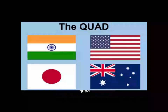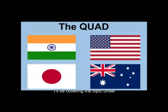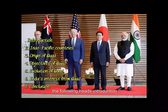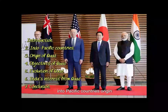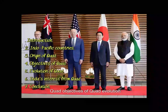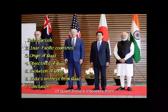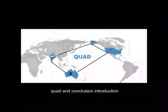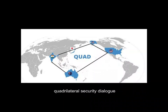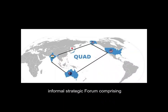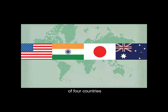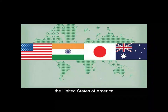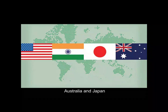Quadrilateral Security Dialogue — I will be covering this topic under the following heads: Introduction, Indo-Pacific countries, Origin of Quad, Objectives of Quad, Evolution of Quad, India's Interests from Quad, and Conclusion. The Quadrilateral Security Dialogue, commonly known as Quad, is an informal strategic forum comprising four countries: the United States of America, India, Australia, and Japan.